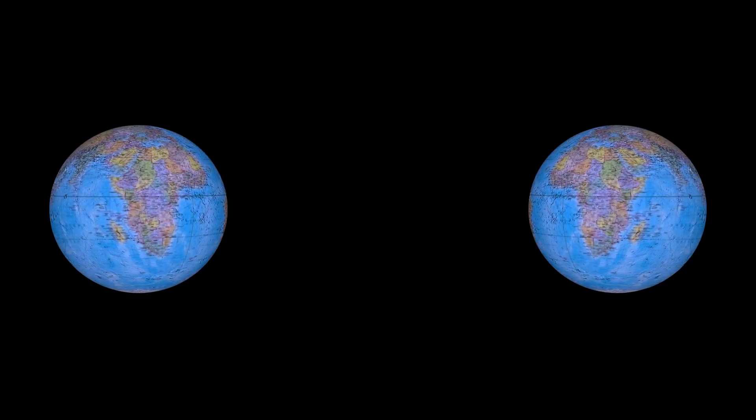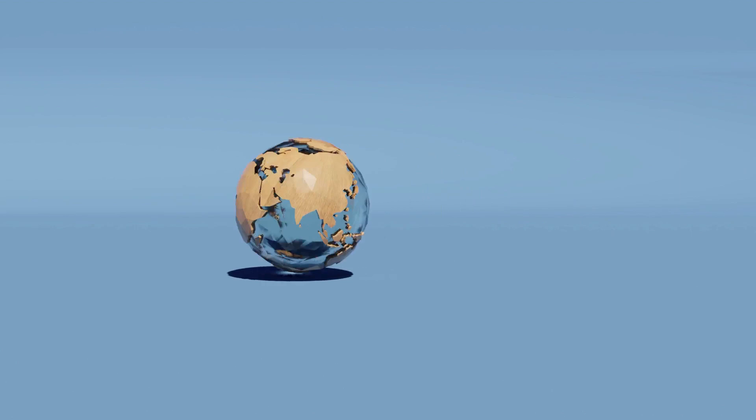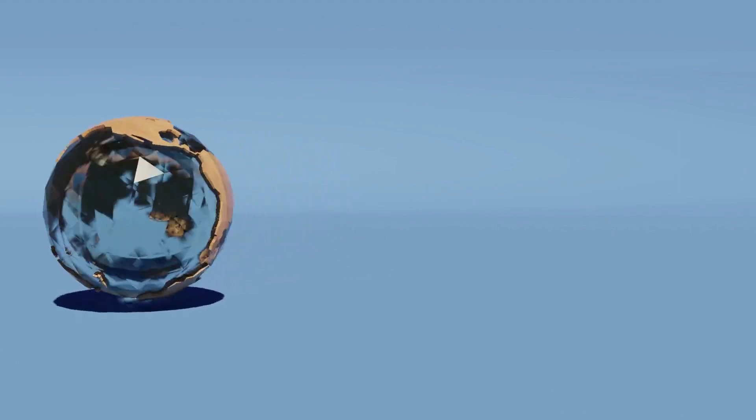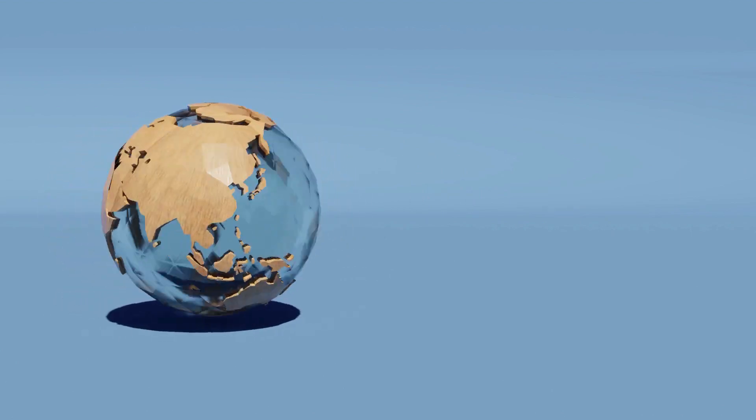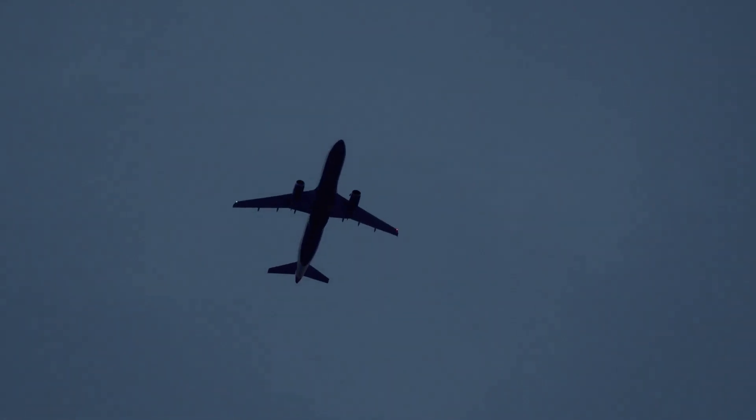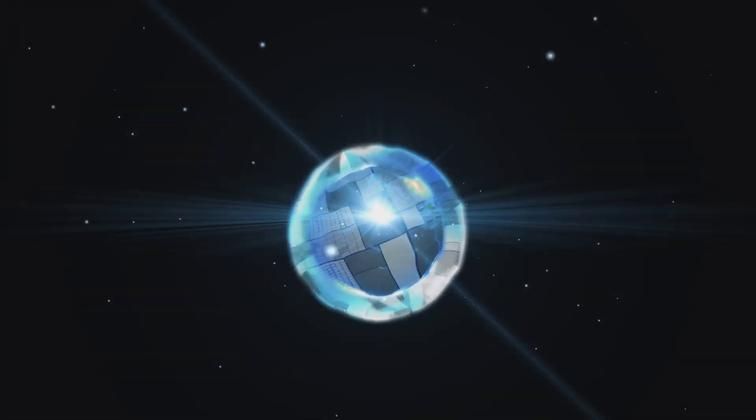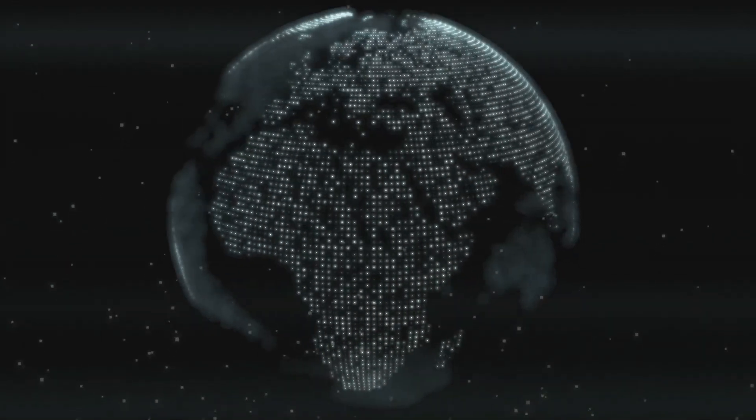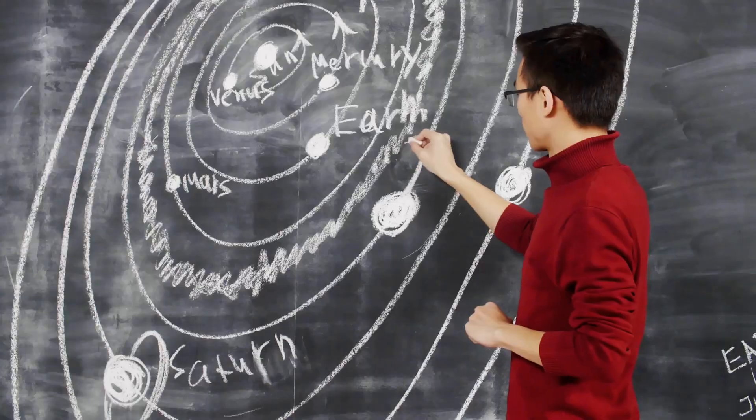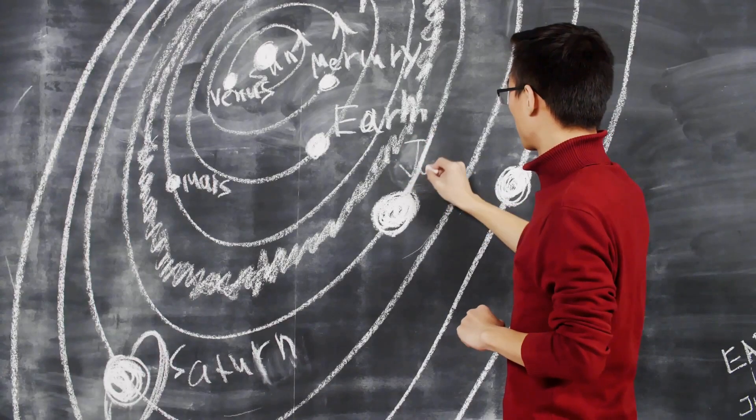At the equator, Earth's surface is moving at an incredible speed of about 1,670 kilometers per hour, or roughly 1,037 miles per hour. That's faster than a commercial jet. This rotational speed is why we experience day and night in a 24-hour cycle. But what if all that motion stopped in an instant? Let's break down the science of what would happen next.